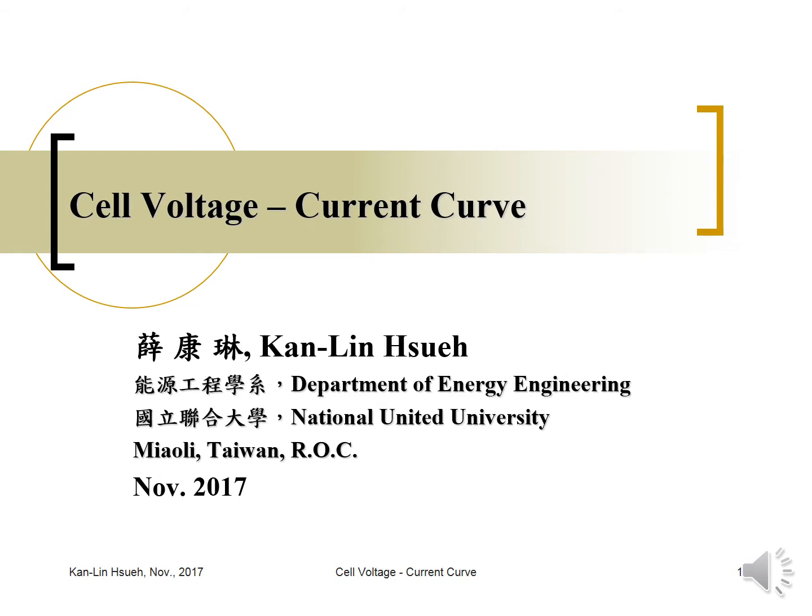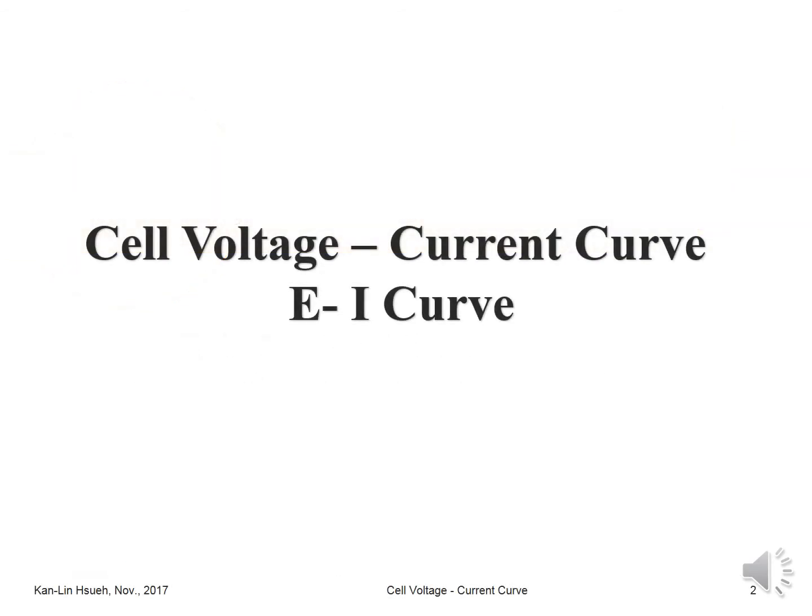The cell voltage-current curve, or EI curve, is one of the most important curves for fuel cell performance. When we consider whether a fuel cell is good or bad, we look at the EI curve, because it tells you at a given current density or output current how much cell voltage you can get. This can also be applied to other batteries during discharge, such as lithium batteries, lead-acid batteries, or nickel-cadmium or nickel-metal hydride batteries.